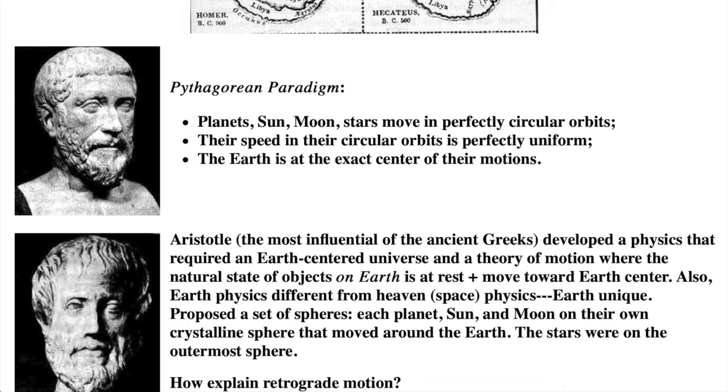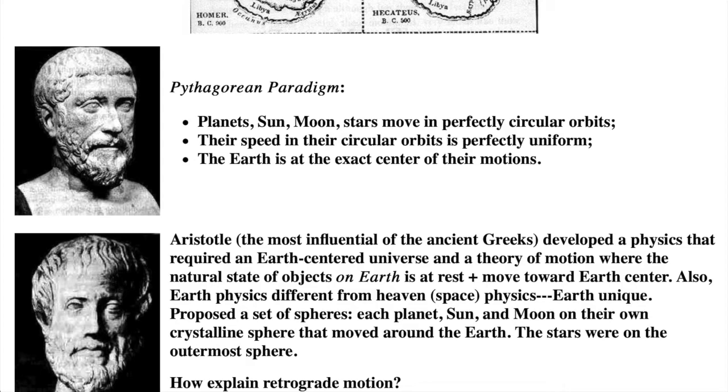For the motions of the planets, Aristotle used Eudoxus's model in which the planets and stars were on concentric crystalline spheres centered on the Earth. Each planet, the sun and the moon, were on their own sphere. The stars were placed on the largest sphere surrounding all of the rest. The spheres spun on the same axis that goes through the Earth, each at different speeds. But how could this explain retrograde motion? It didn't.